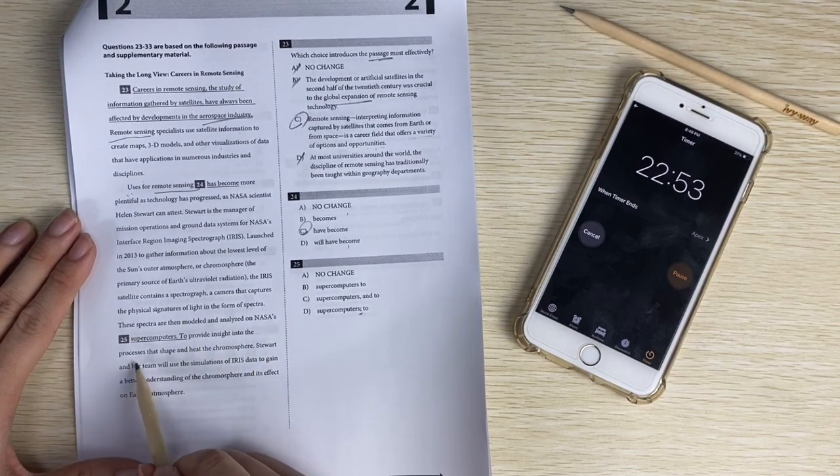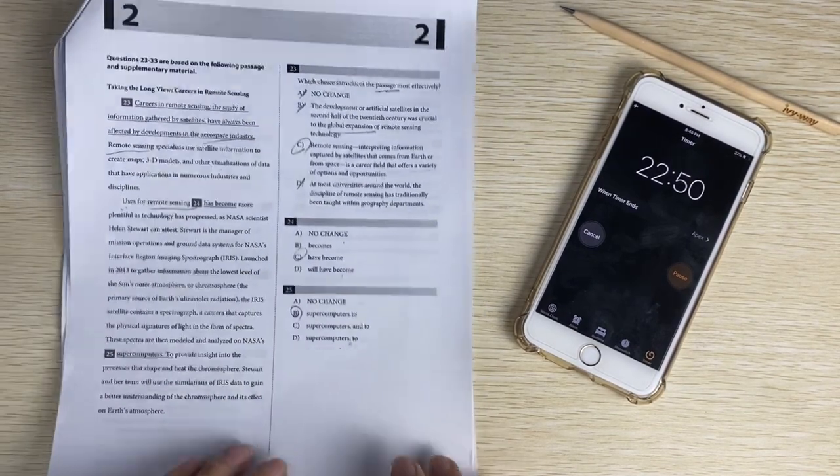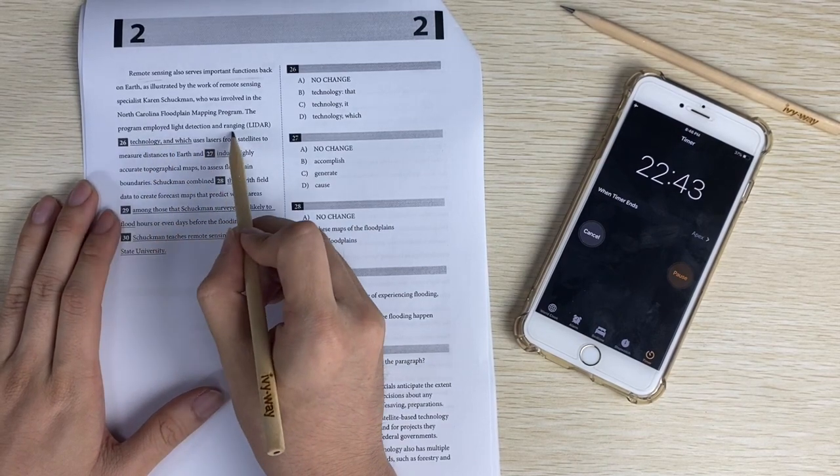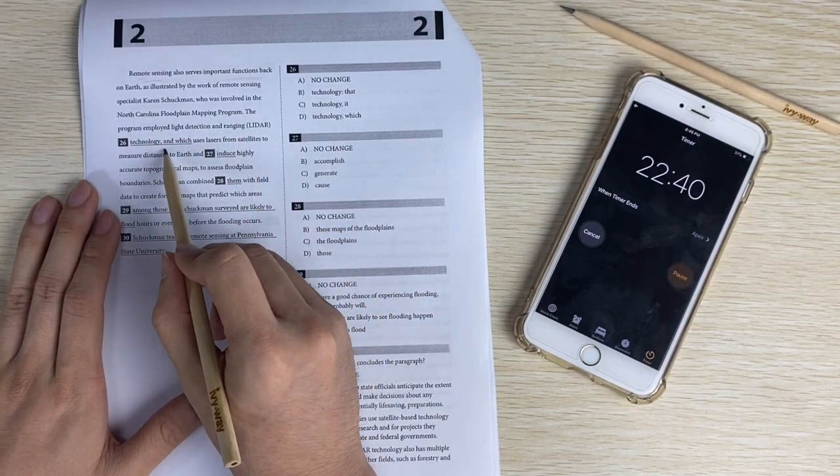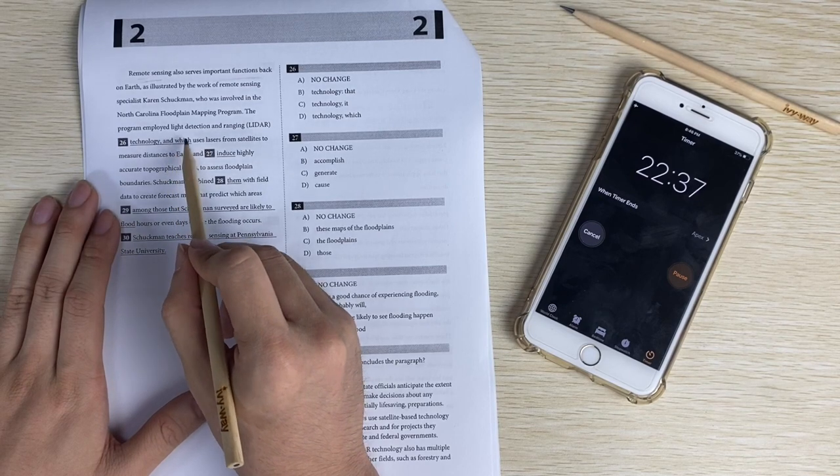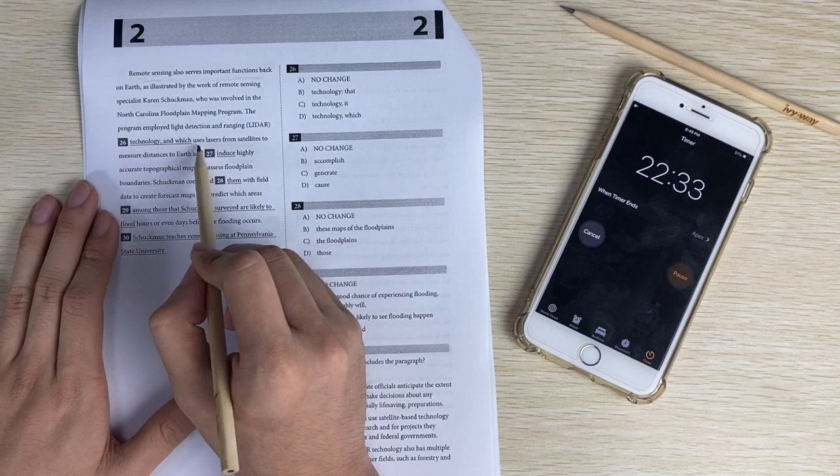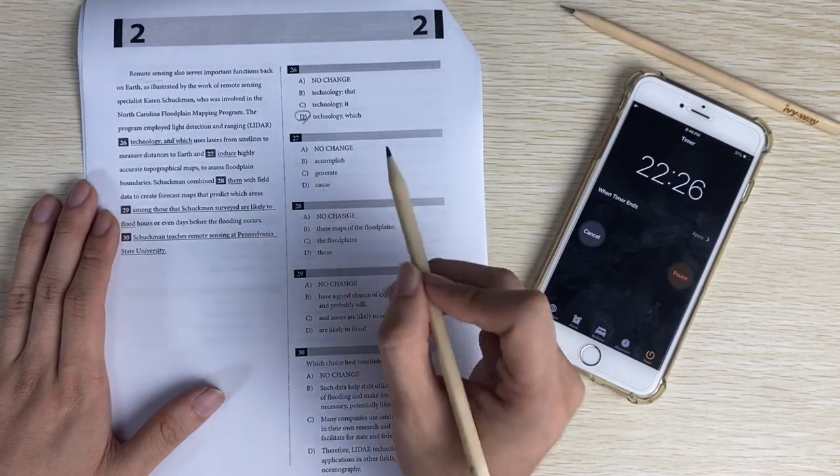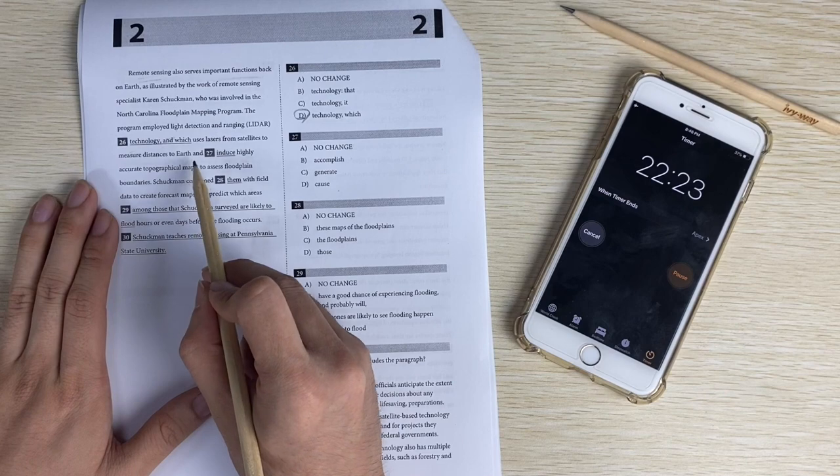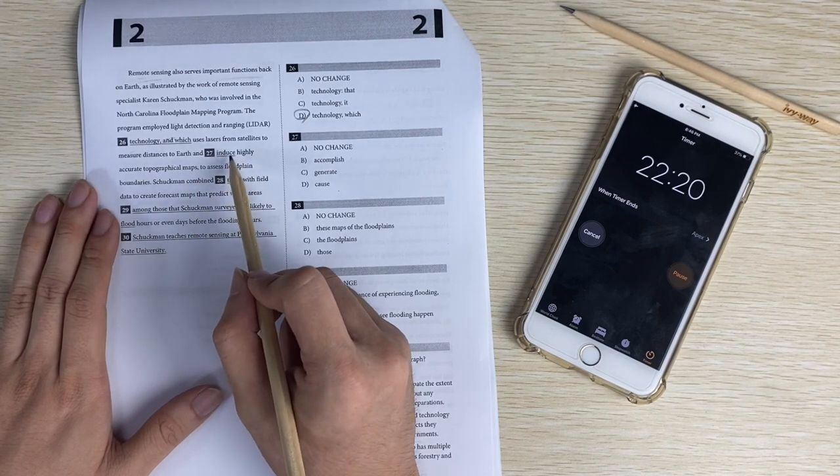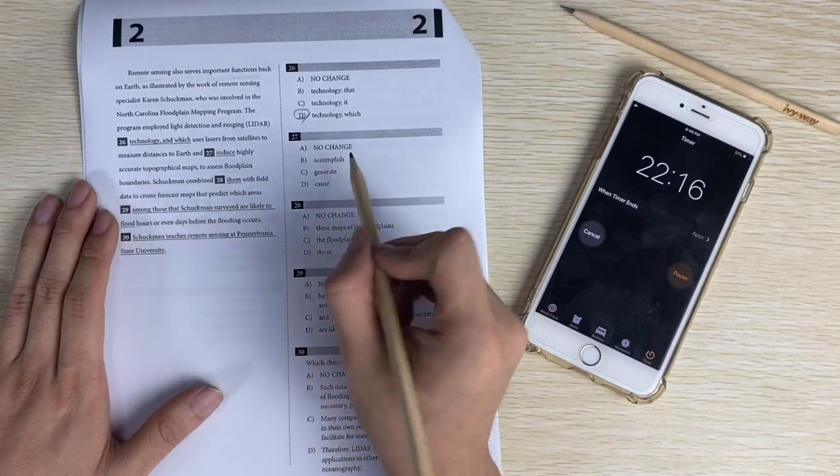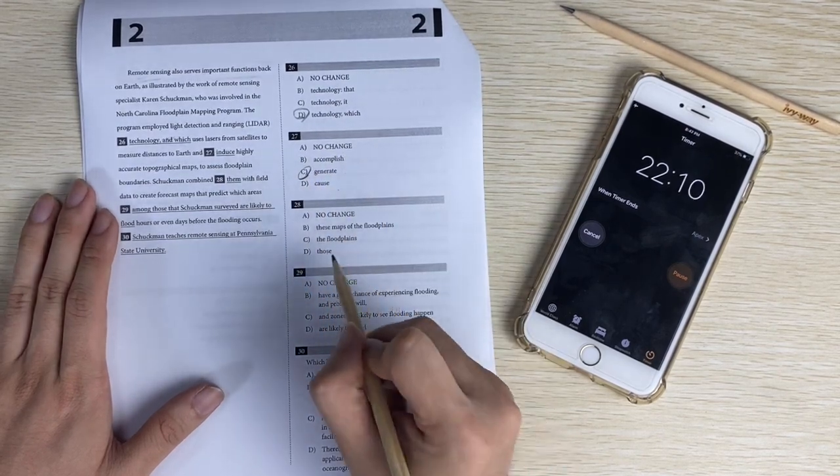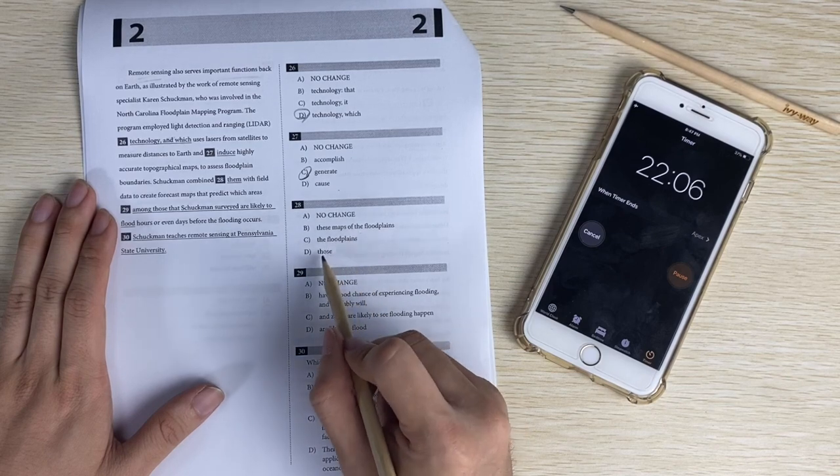Number twenty-five. Supercomputers too, so maybe fragment run-on. The spectra are then modeled and analyzed on NASA supercomputers to provide insight into the process that shapes. So there's one sentence. The answer is B. Twenty-six, the program employed light detection and ranging LiDAR technology. Program employed that technology and which uses. So it should be not 'and which' but 'which uses.' So that is the answer.